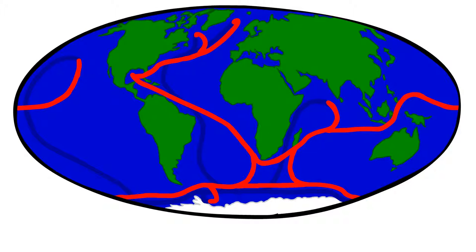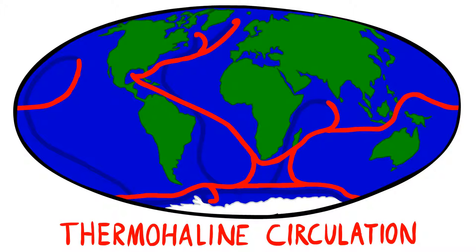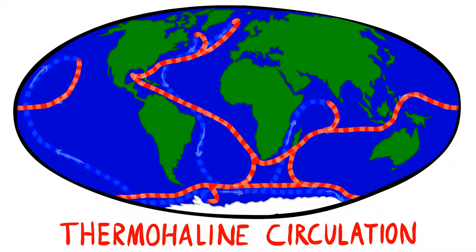That leaves us with the ocean's thermohaline circulation to discuss. It redistributes ocean waters all over the world based on their density due to salinity and temperature. Much of the water that reaches the surface in the Southern Ocean has been submerged for hundreds of years.